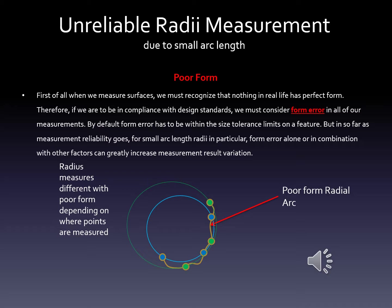The diagram shown in this slide is of a small arc length illustrated by the yellow squiggly line of dramatically poor form. The blue dots represent one sampling of points to create a radius on that small arc — the resultant radius is shown in blue. The set of green points is a slightly different sampling on the same arc of poor form that results in a different radius illustrated in green. So you can see that the results can be quite different with poor form.